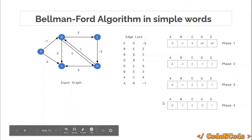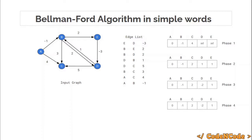How to find the presence of a negative weight cycle will be explained in a separate lecture. To summarize: Bellman-Ford algorithm uses an edge list and performs at most n minus 1 phases. In each phase you traverse the edge list and try to relax the distances. The time complexity is O(n times E), where n is the number of nodes and E is the number of edges. In the next lecture, I'll present the proof of correctness and the implementation.